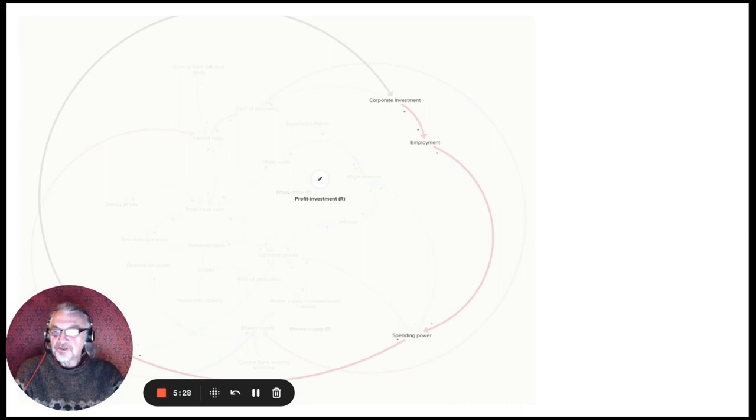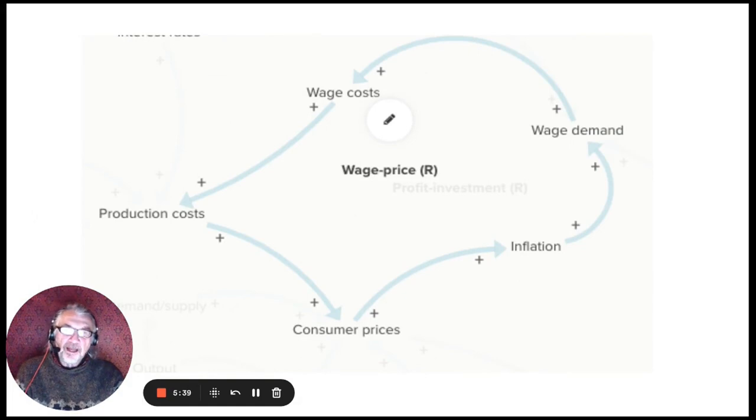The spending power goes down, profits go down, if profits go down investment goes down, investment goes down employment goes down, if employment goes down spending power goes down, etc. It's a negative loop. And of course the one we identified earlier, the wage price spiral where inflation causes wage demands which in turn cause production costs and then consumer prices.